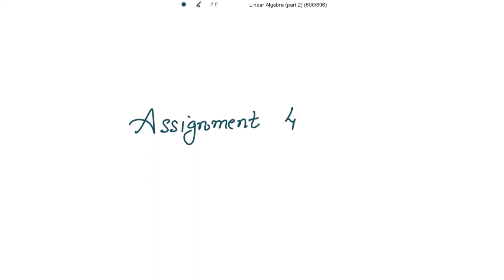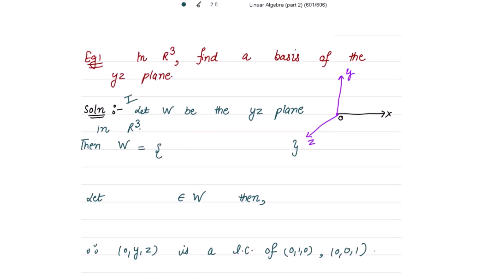Good morning. Let's start assignment 4. The example is: find the basis of the YZ plane in R3. The YZ plane contains the y-axis and z-axis. Let W be the YZ plane in R3. The elements of W have x-coordinate equal to 0, with y and z belonging to the set of reals. W is already a subspace of R3.